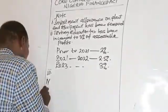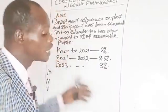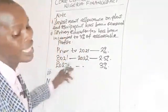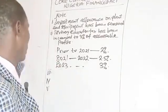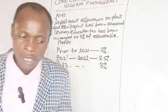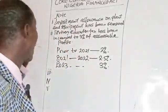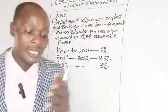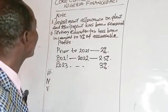Number five: taxation of gains on the disposal of digital assets, including cryptocurrency, is at the rate of 10%.